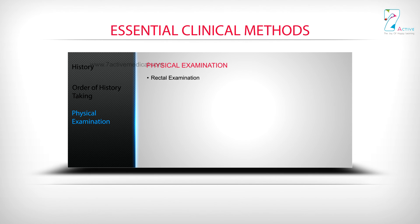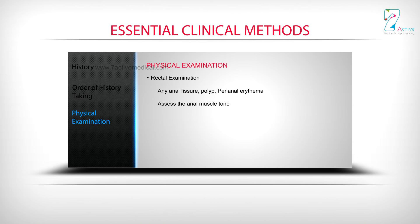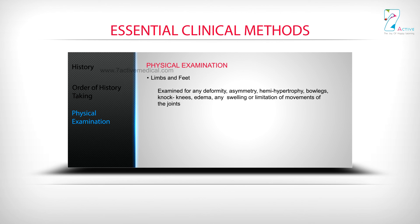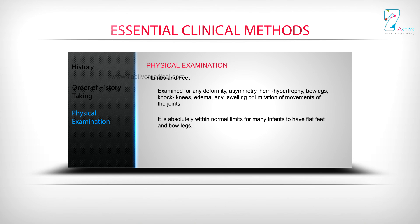Rectal examination: any anal fissure, polyp, perianal erythema; assess the anal muscle tone. Limbs and feet: examined for any deformity, asymmetry, hemihypertrophy, bow legs, knock knees, edema, any swelling, or limitation of movements of the joints. It is absolutely within normal limits for many infants to have flat feet and bow legs.